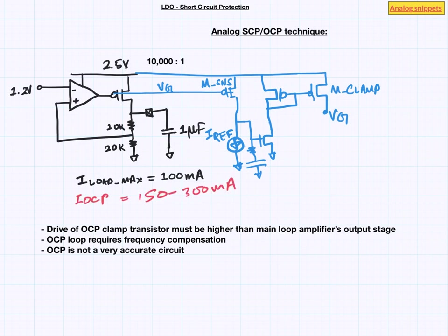And that means even though your operating current is 100 mA, the metallization in power transistor should be able to take 300 mA. But still it is much better than 1 A which it would have to be without OCP loop.